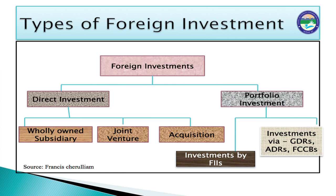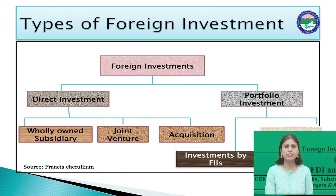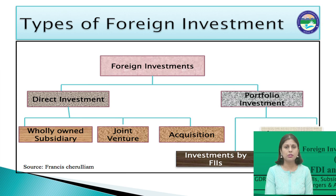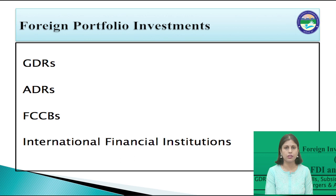Foreign portfolio investments can be made through GDRs (Global Depository Receipts), ADRs (American Depository Receipts), and FCCBs (Foreign Currency Convertible Bonds) issued by Indian companies to raise funds from the international market. Besides that, foreign institutional investors can also make investments in Indian securities. First, we will discuss GDRs and how they work.